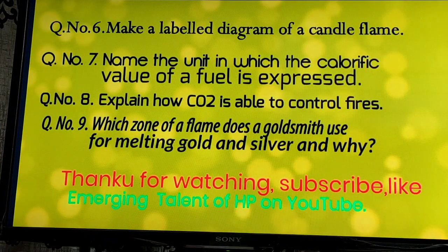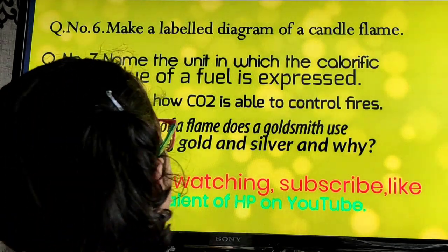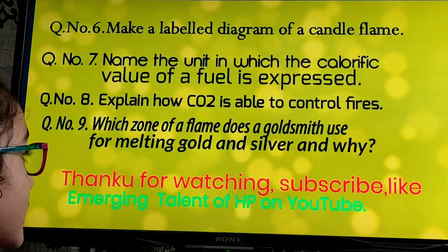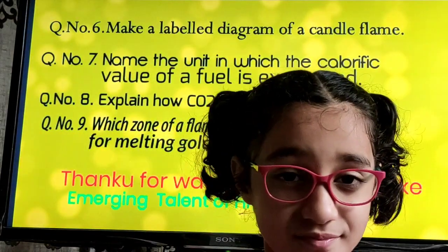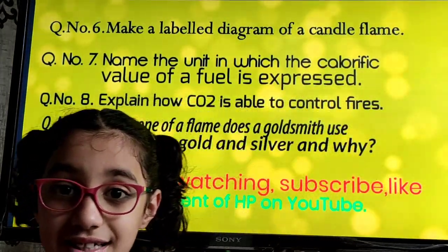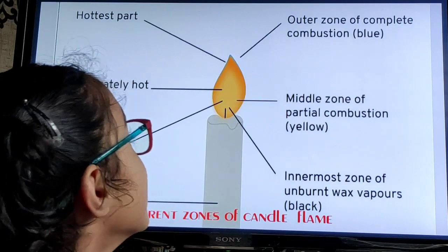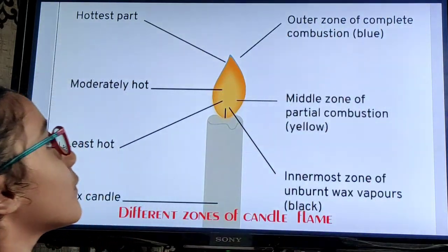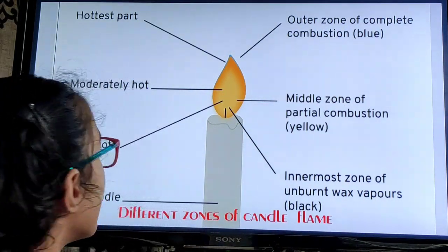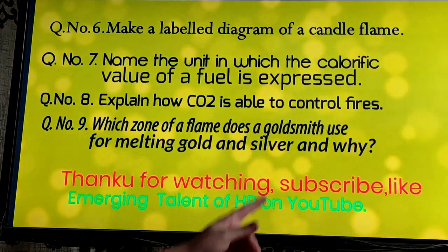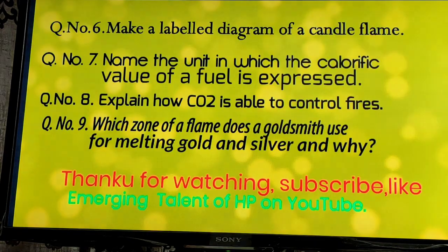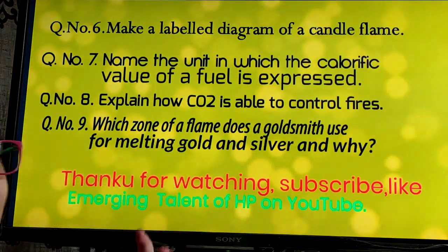Question Number 9: Which zone of a flame does a goldsmith use for melting gold and silver? A goldsmith uses the outer zone of complete combustion, which is blue, for melting gold and silver, because it is the hottest part.